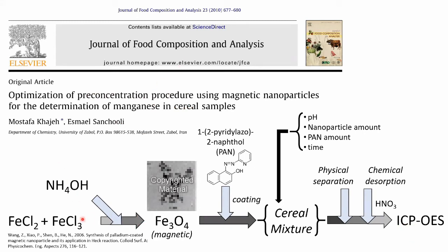This paper uses a method of making iron oxide magnetic nanoparticles through a precipitation procedure, then coating those nanoparticles with an organic molecule abbreviated PAN, which can absorb the manganese out of a cereal mixture. The authors are chemists rather than materials scientists, so the article focuses on chemistry and optimization of different parameters for this procedure to determine which ones give the best chemical absorption of manganese, and then they measure it using ICP-OES.